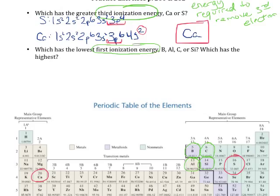In order to figure out the ionization energy trend, I like to think about the radius trend. Something with a low first ionization energy means it's going to be relatively easy to remove electrons. For that to be easy, we want an element where the nucleus is not holding onto electrons very tightly. If the radius is very large, that nucleus can't hold onto the electrons that are very far away. So we want to find the element with the largest radius.